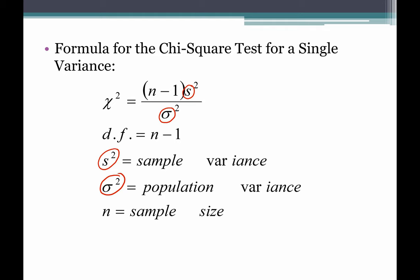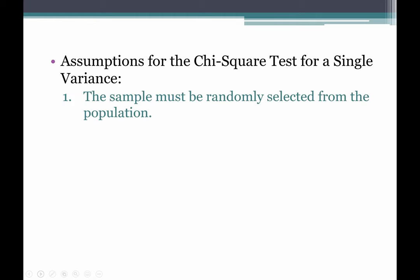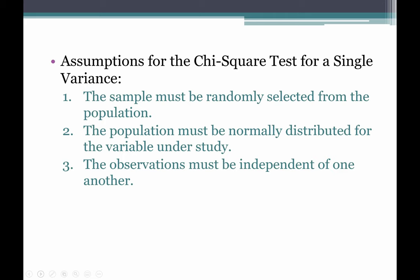If you're given population standard deviation, you substitute in for little sigma and then you have to square it. So read very carefully what information you are given. n is our sample size, and degrees of freedom is still just n minus one, like we saw with our t-distribution. Our assumptions are: the sample is randomly selected from the population, the population is normally distributed, and the observations must be independent of one another.